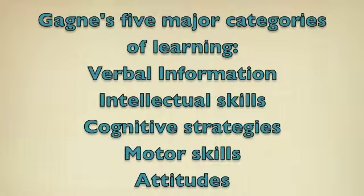Gagné's conditions of learning states that there are several different types of learning: verbal information, intellectual skills, cognitive strategies, motor skills, and attitudes. Gagné's theory covers all aspects of learning but focuses mainly on intellectual skills. He states that each of these types of learning requires a different method of instruction.